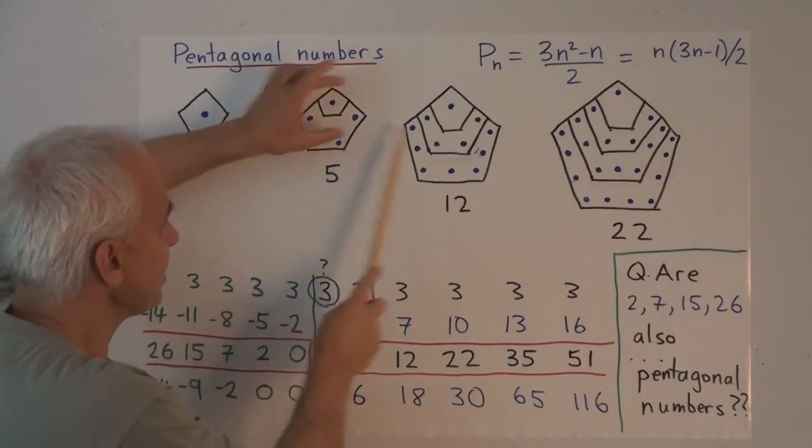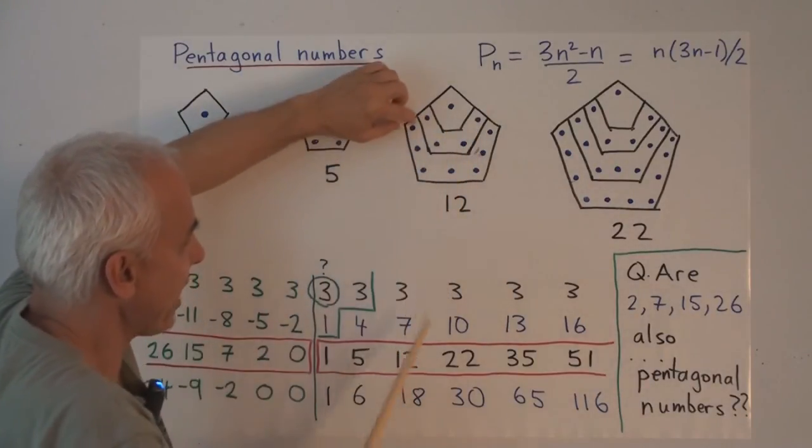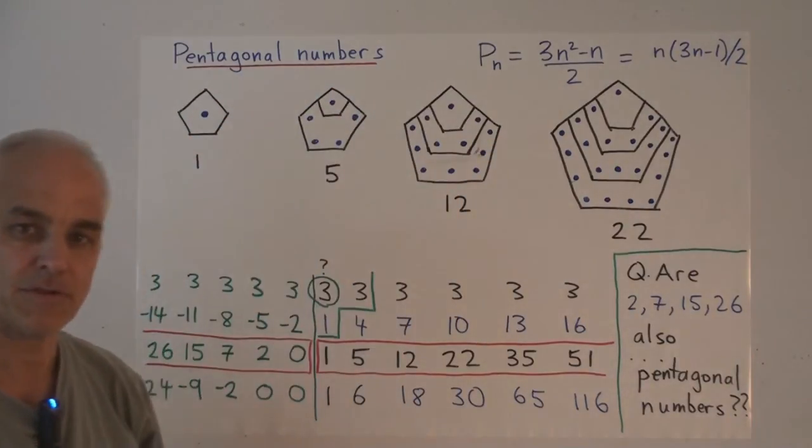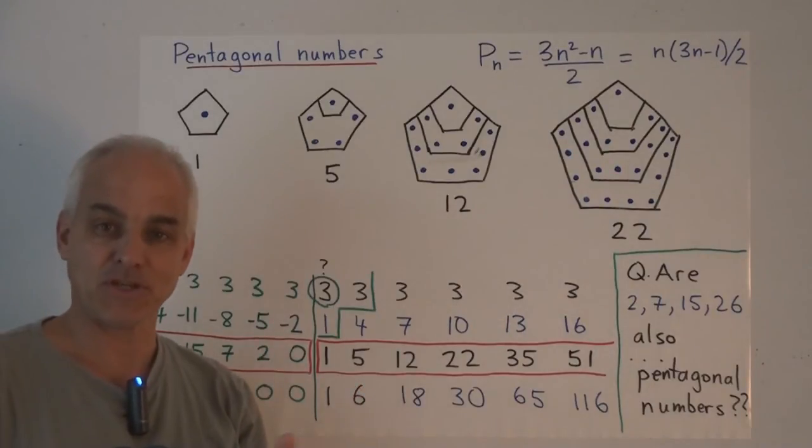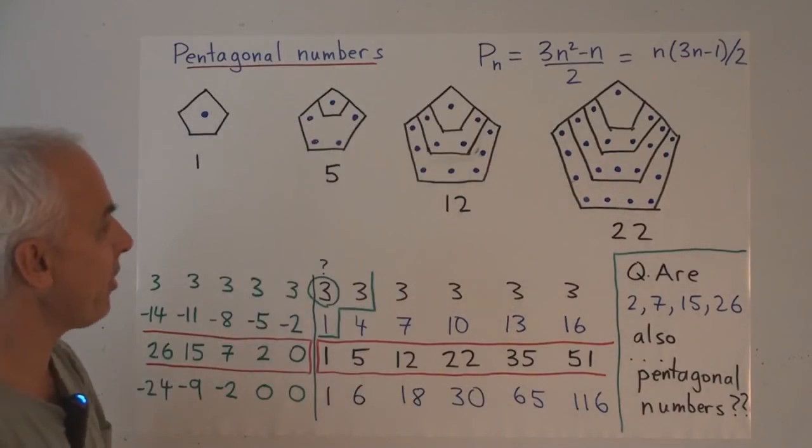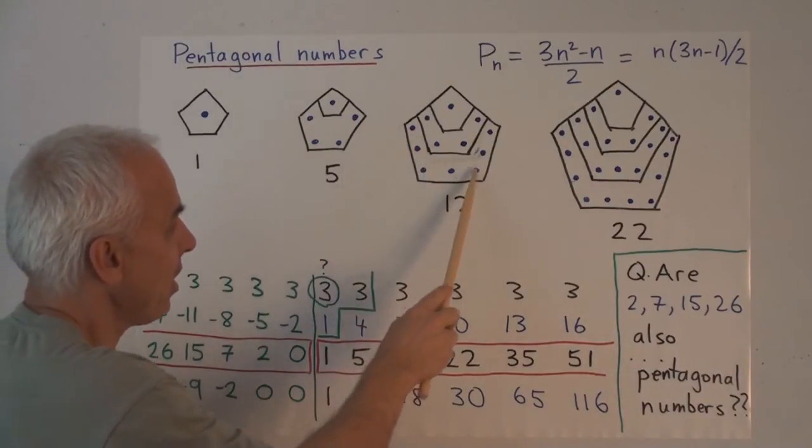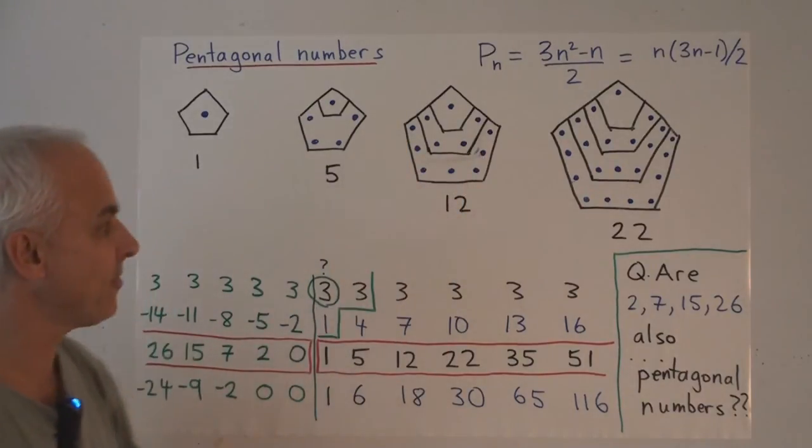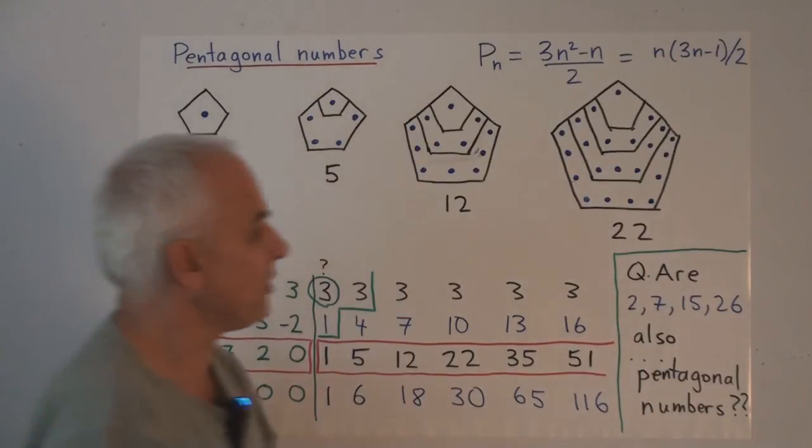And then on the next step, we copy this picture over here, and then we add another layer. Or maybe the ancient Greeks would call such a thing a gnomon. Another layer of cannonballs, this time 3 on each side, of 3 sides, getting a total of 12.